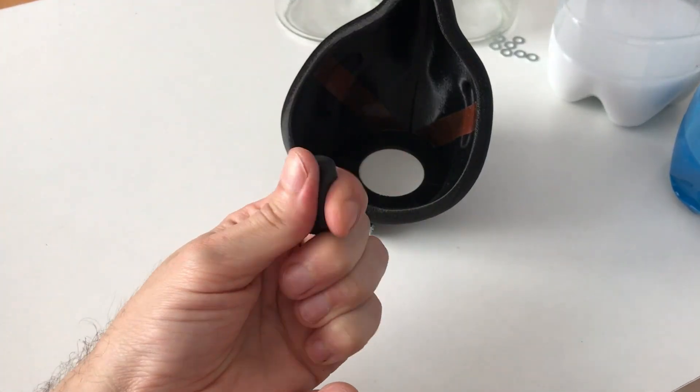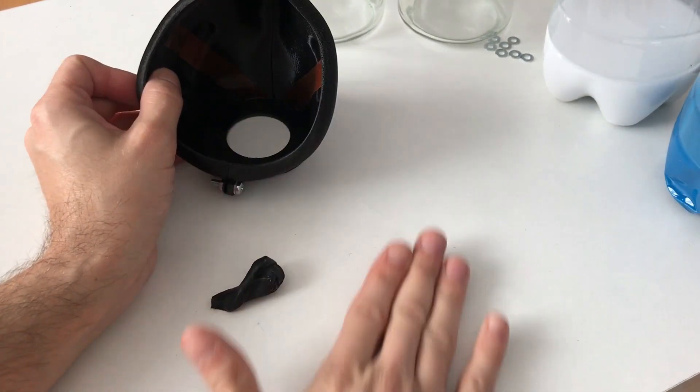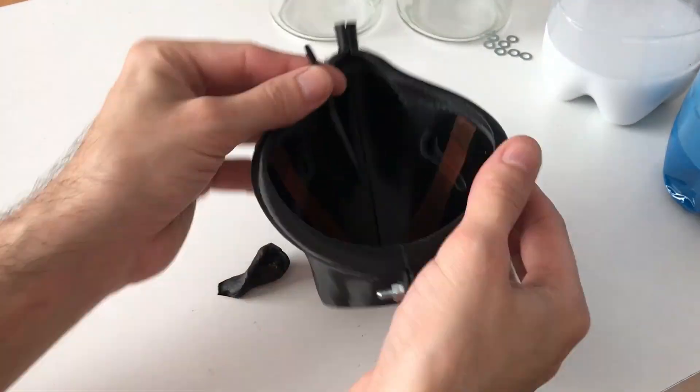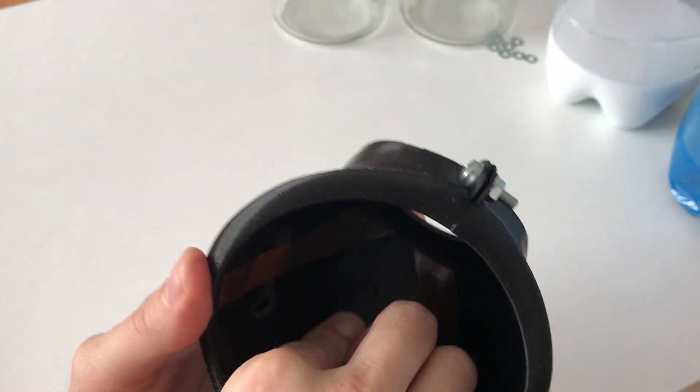Next, I used sculpting wax to seal the mold. The silicone has high fluidity and if the mold is not properly sealed, it will make a big mess. Instead of sculpting wax, plasticine or various types of clay can be used as long as they won't harden over time.